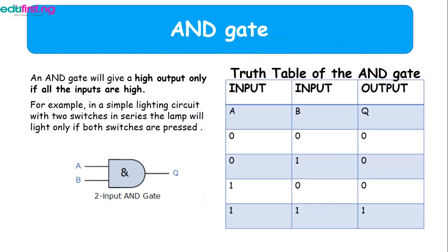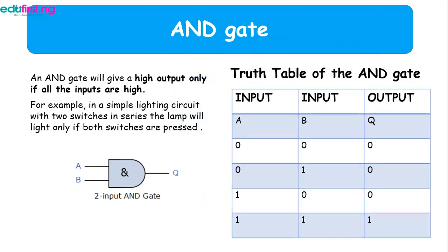Now if you look at the table for the AND gate, when the two circuits are off, the output is off. So when the two of them are on, which is represented by 1, the circuit is 1.